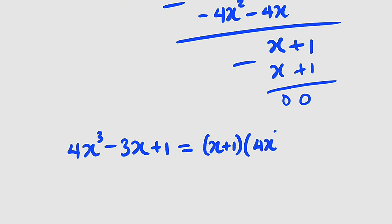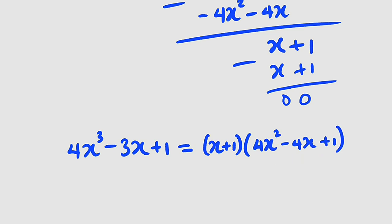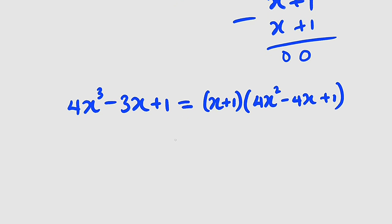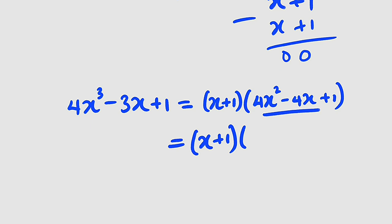4x squared minus 4x plus 1 is a perfect square quadratic expression, which factorizes as 2x minus 1 squared. So the full factorization is x plus 1 times 2x minus 1 squared.